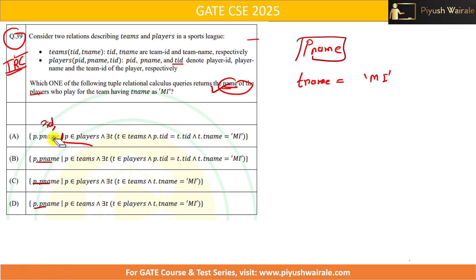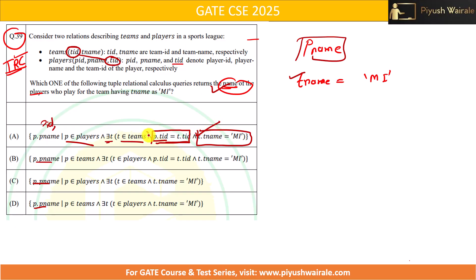After the vertical bar we have: P belongs to Players, and there exists T such that T belongs to Teams, P.TID equals T.TID — so we are joining the two tables on TID. The required condition T.TeamName equals 'EMI' is also present. We have the projection, the join condition, and the required condition all correct, so option A is correct.